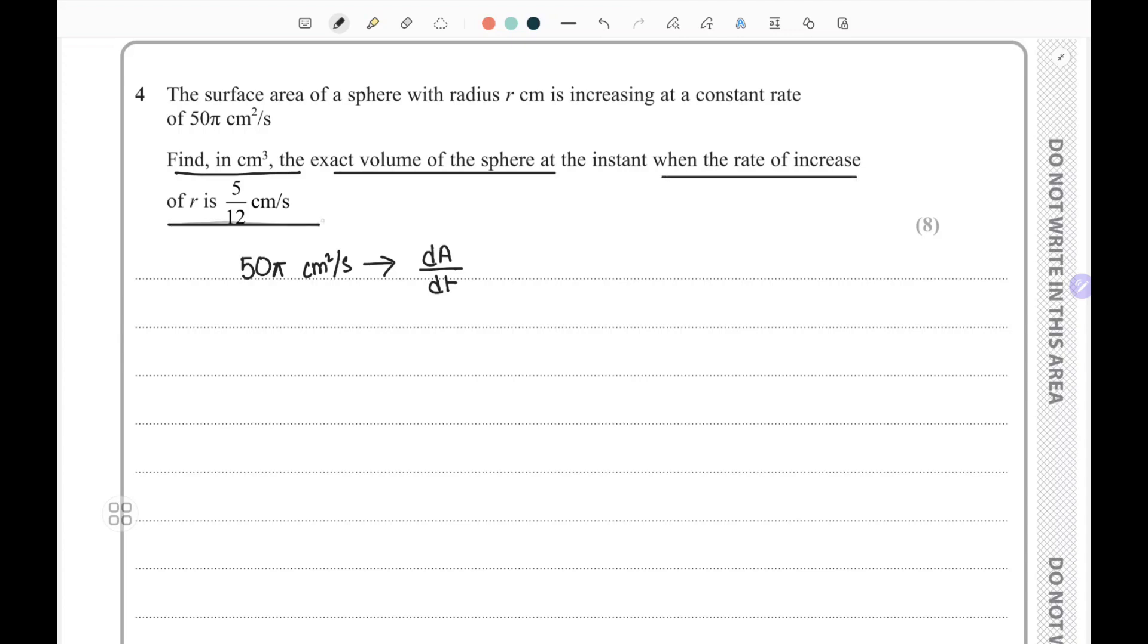They've also given us dr/dt as well, which is 5/12 cm per second. So area of a sphere is equal to 4πr², and volume we require is 4/3 πr³.